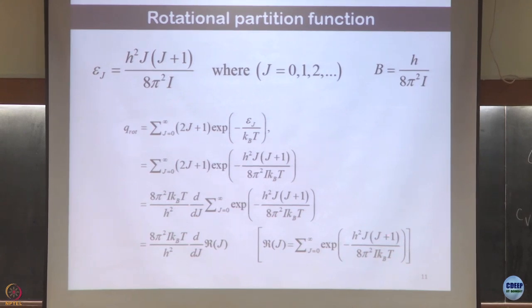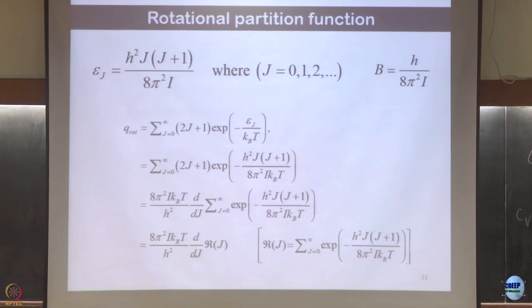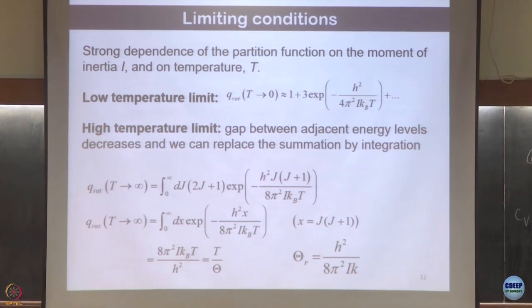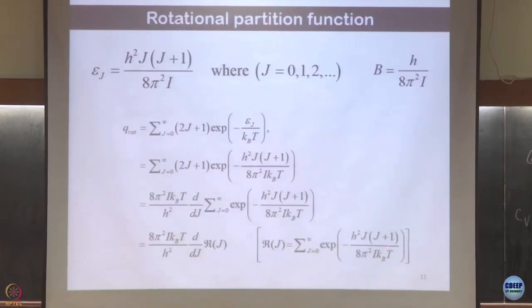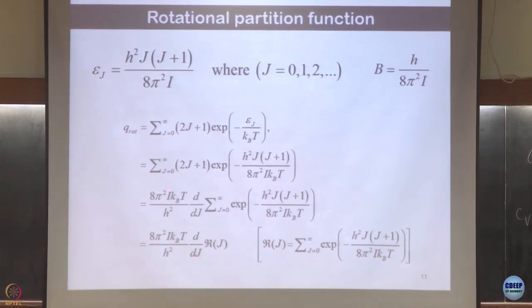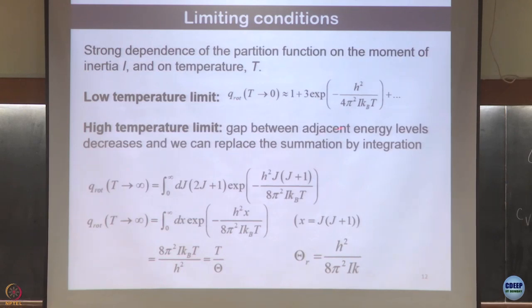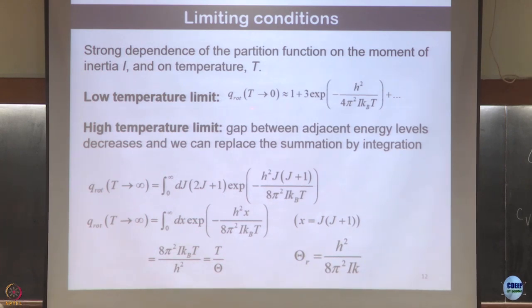At low temperature, only the first term is enough. For J=0, the degeneracy is 1; for J=1, it becomes 3. I keep only one additional term (J=1), which gives me a good low-temperature approximation for the partition function.